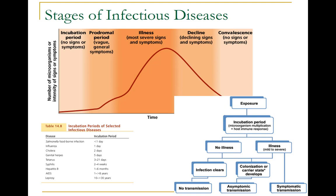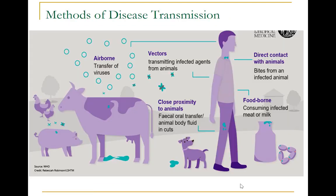The important point to remember is that infectious diseases are transmitted every day from people who are sick as well as from those who appear to be healthy. In fact, colonized persons and persons who are incubating an infection may present more risk for disease transmission than persons who are sick, because they are not aware of their infection, their contacts are not aware of the infection, their activities are not restricted by illness, they do not have symptoms, and therefore do not seek treatment. This is known as asymptomatic transmission.